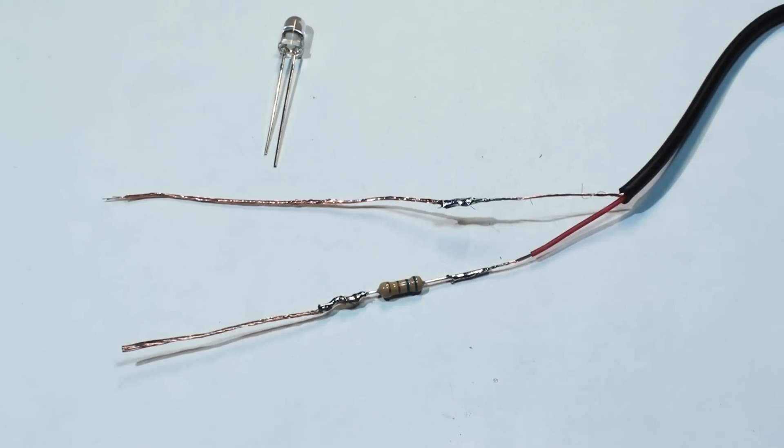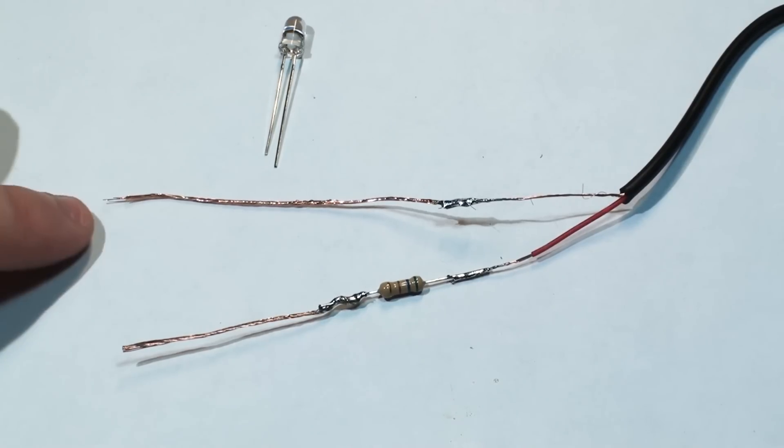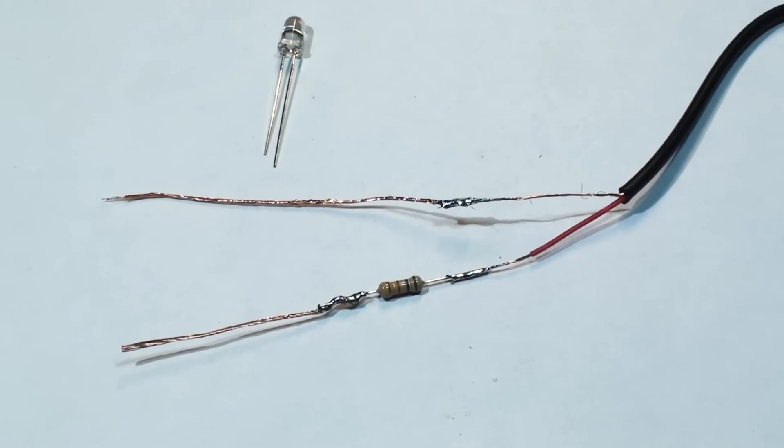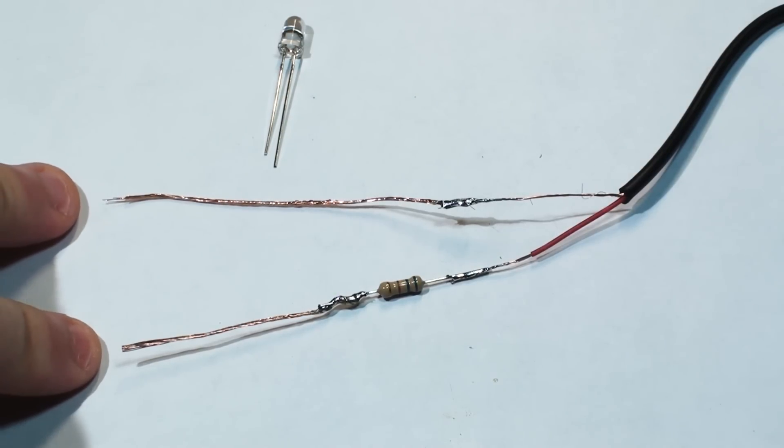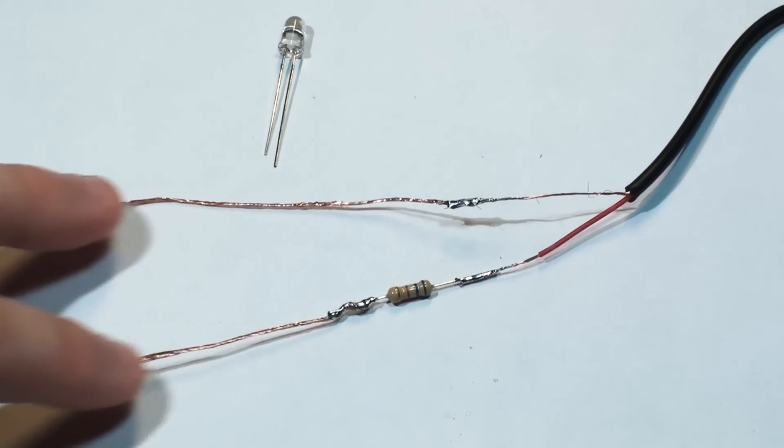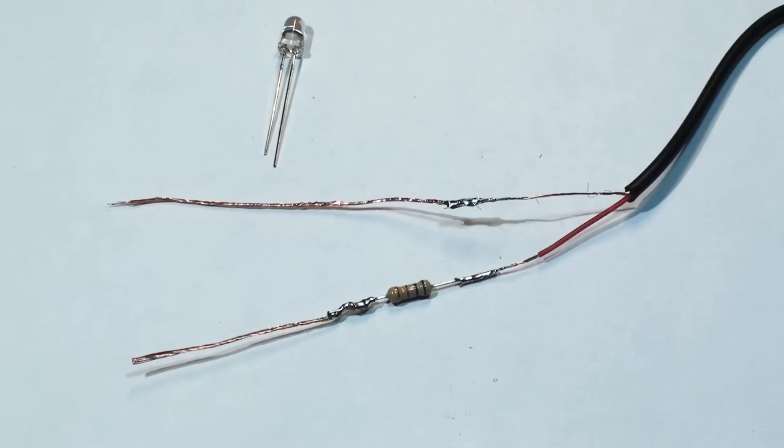This is what it should look like after you solder your other stripped wire to the negative side. I'd like to mention that my leads are a little short, so I'm probably not going to be able to fit six LEDs that I originally planned, but I'm going to try to fit as much as I can. Just make sure your leads are long enough to accommodate how many LEDs you're going to be wiring.